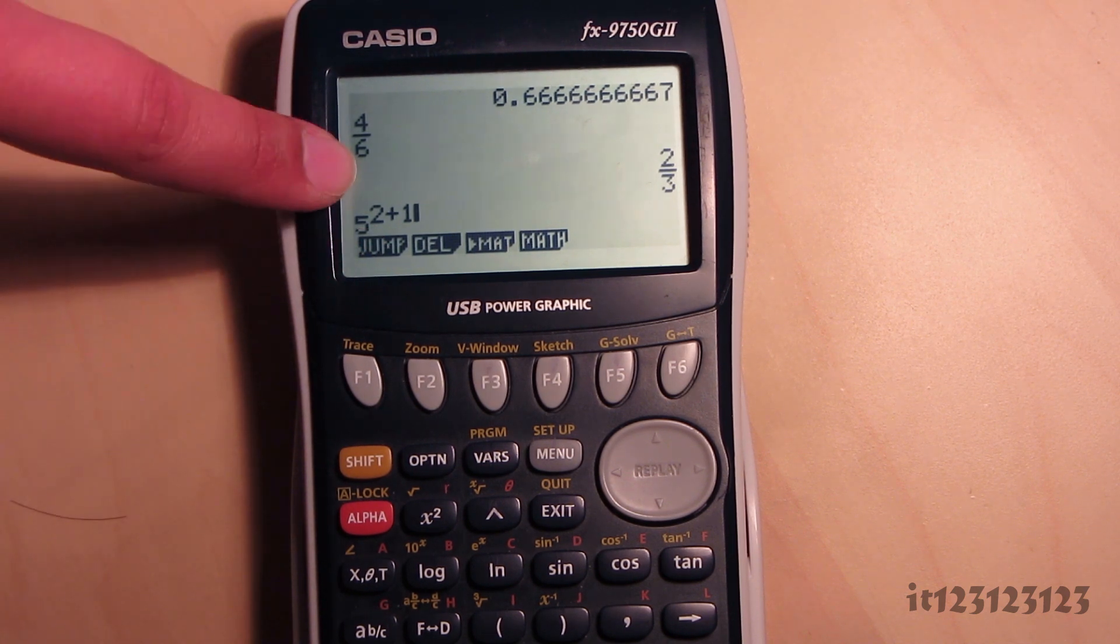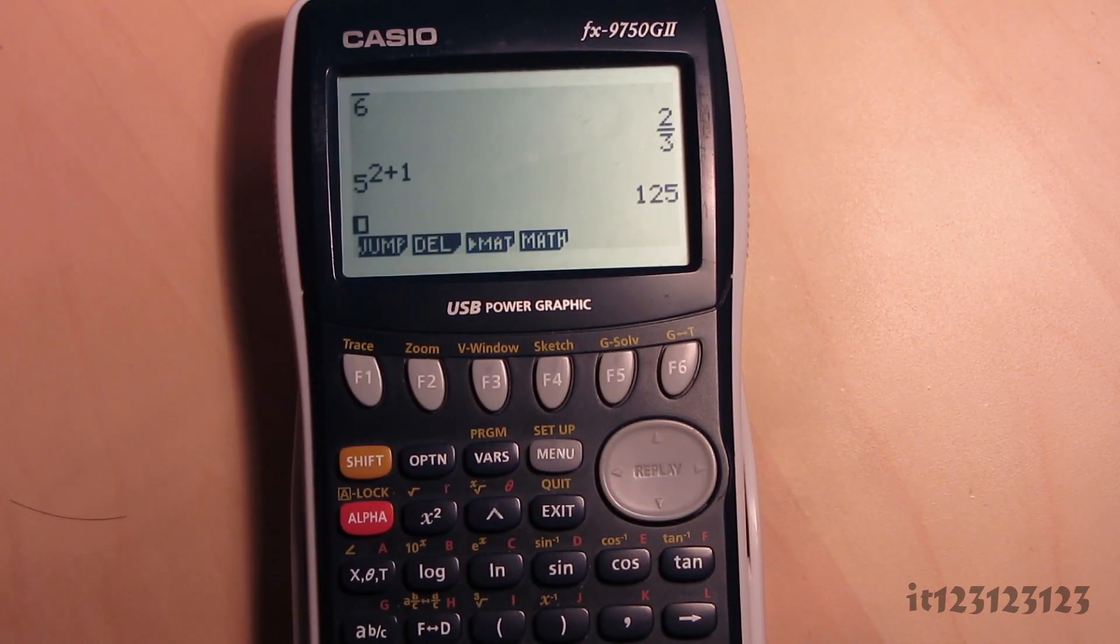So for example, 5 to the 2 plus 1. So this should equal 125. There we go.